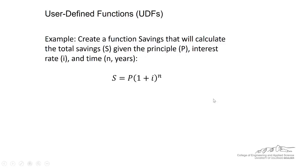What we want to be able to do in Excel is to type in, in a cell, equal savings, and we have the three arguments. We have the principal, the interest, and the number of years, and it gives us the savings at the end of n years.